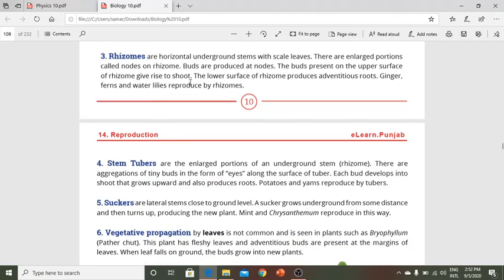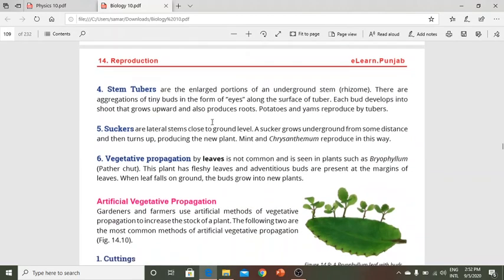Rhizomes are horizontal underground stems with scale leaves. Buds are produced on nodes present on the upper surface of the rhizome. Ginger, ferns, and water lilies reproduce through rhizomes.